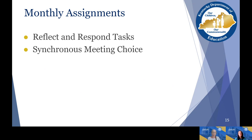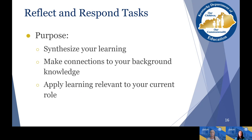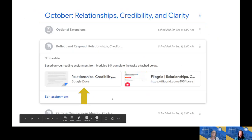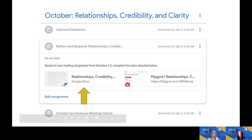Now let's talk about the monthly assignments. Each month there are two assignments you will complete. The first is what we call the Reflect and Respond task; the second is the Synchronous Meeting Choice. The purpose of the Reflect and Respond tasks is to allow you a chance to synthesize your learning, make connections from your background knowledge to what you're learning from the text, and apply that learning in a way relevant to your current role. To access it, under the Classwork tab, items are always titled 'Reflect and Respond' followed by a colon and the topic for that month.